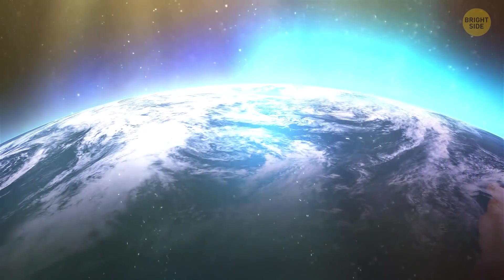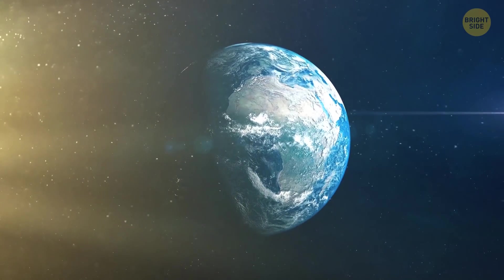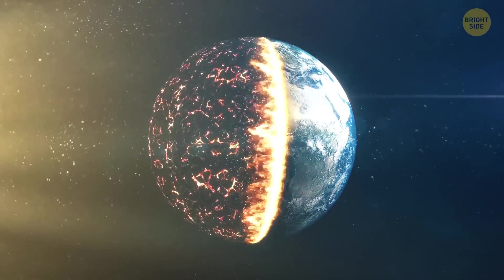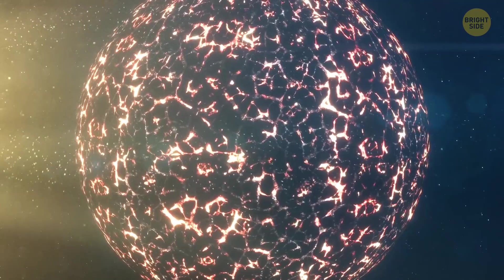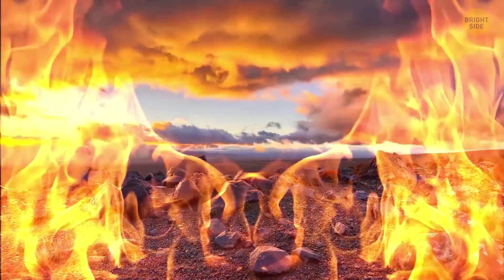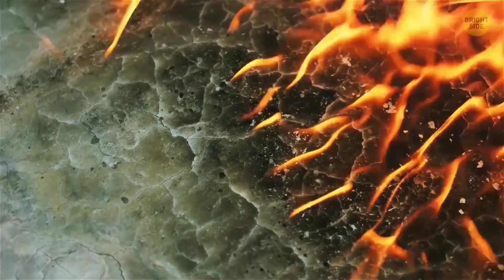A starburst as powerful as you can imagine lit the Earth brighter than the sun one day. And soon, its UV and cosmic rays reached the ozone layer of our planet. As they did, the planet's protective cover was burnt away, and everything that was below suffered the consequences.